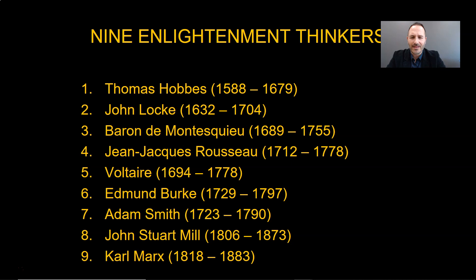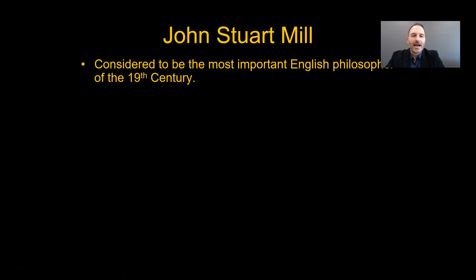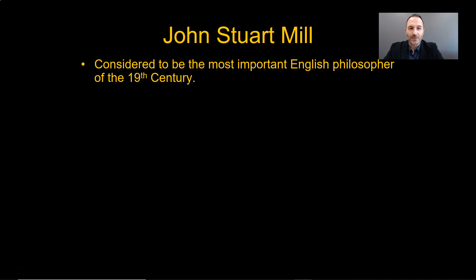You can just refer to him as Mill. If you talk about the idea of the harm principle or the idea of utilitarianism and you mention Mill, I know who you're talking about. John Stuart Mill is a classical liberal philosopher — in fact, he is considered to be the father of classical liberalism because of his views. He is a big deal, one of the most important philosophers of the 19th century.